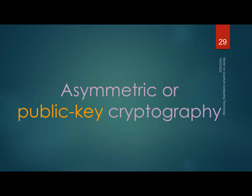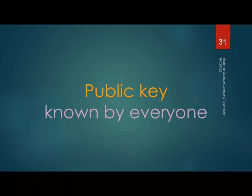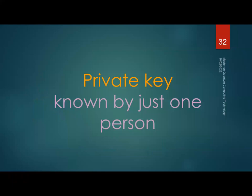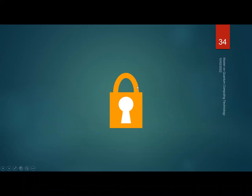These algorithms fall under what is called asymmetric or public-key cryptography. There are two keys: a public key, known by everyone, and a private key, known only by one person. To encrypt a message, you use the recipient's public key to create a ciphertext; the recipient uses their private key to decrypt it and recover the plaintext. It's like a padlock — anyone can lock it, but only the keyholder can open it. The minimum key length for RSA is about 1024 bits.